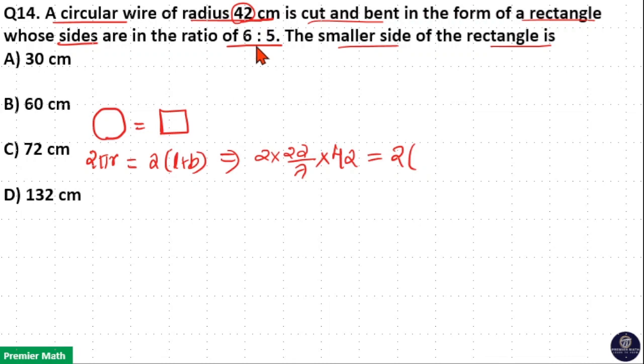Length and breadth are in the ratio 6 is to 5. Then l plus b is equal to 6 plus 5, which is 11 parts. So 11 parts I will write as 11x.